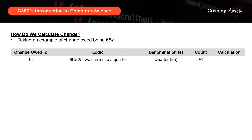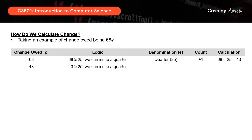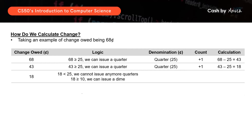After we issue a quarter, the balance change owed is 68 cents minus 25 cents, which gives us 43 cents. On to the next row — since 43 is still greater than 25 cents, we can actually issue another quarter. So we add one more coin to our stash. Now the balance is 43 minus 25, which gives you 18 cents. Based on the balance change owed being 18 cents — since 18 is less than 25 — we cannot issue any more quarters. We need to move on to the next denomination, which is a dime.